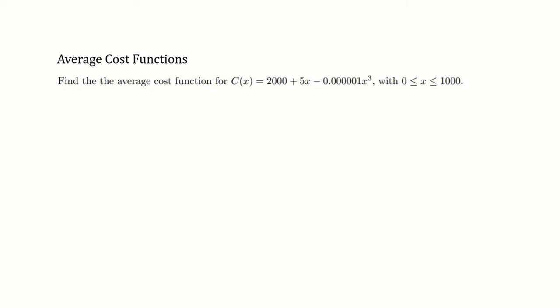Find the average cost function for C(x) equals 2000 plus 5x minus 0.0000001x cubed, with 0 ≤ x ≤ 1000.